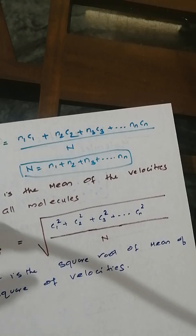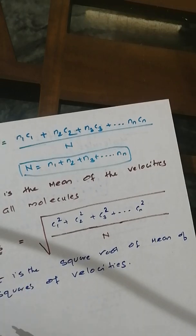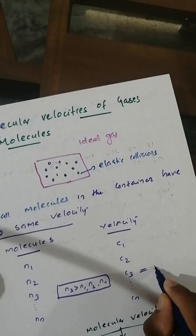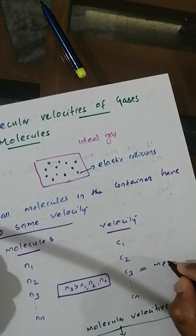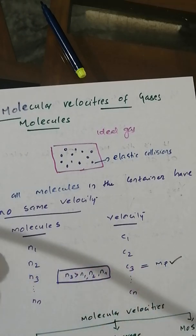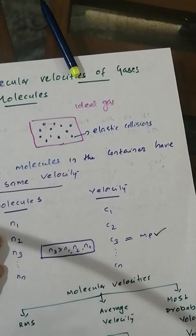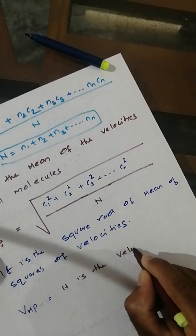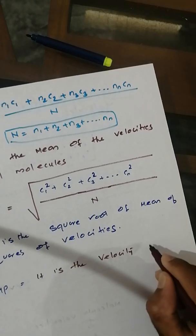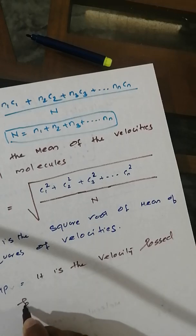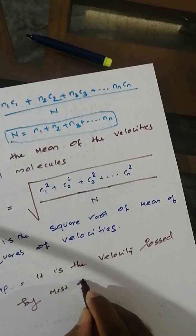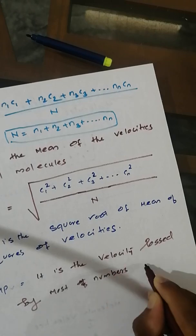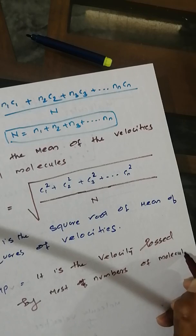Now what is most probable velocity? Going back to our earlier discussion — most probable velocity is the velocity possessed by most of the molecules. Because n3 is greater than any other number, c3 is the most probable velocity. It is the velocity possessed by the greatest number of molecules.